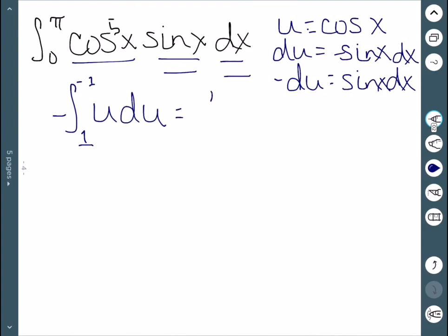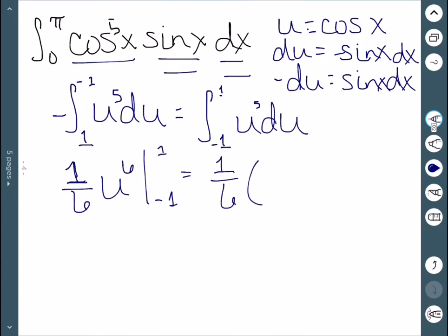So as a reminder, if you flip the limits of integration, it changes the sign of the integral. So we can make this positive. So we now have 1 over 6, u to the 6th, going between negative 1 and 1. So this is 1 over 6. 1 to the 6th is 1. Negative 1 to the 6th is 1, which is 0.